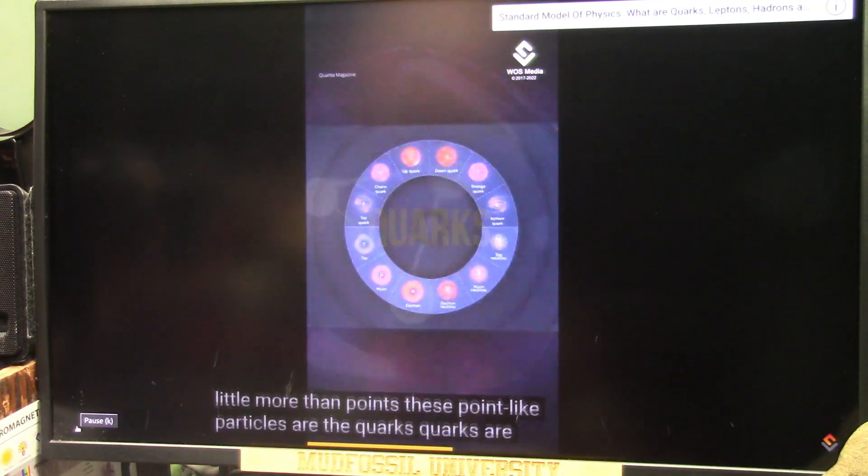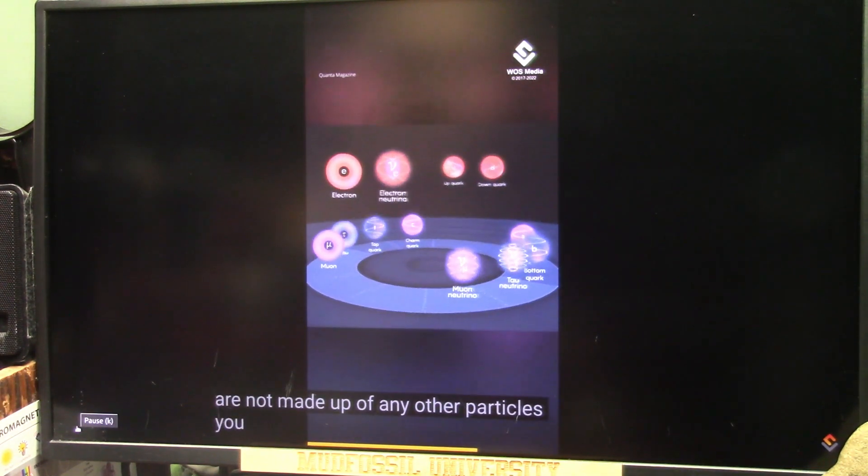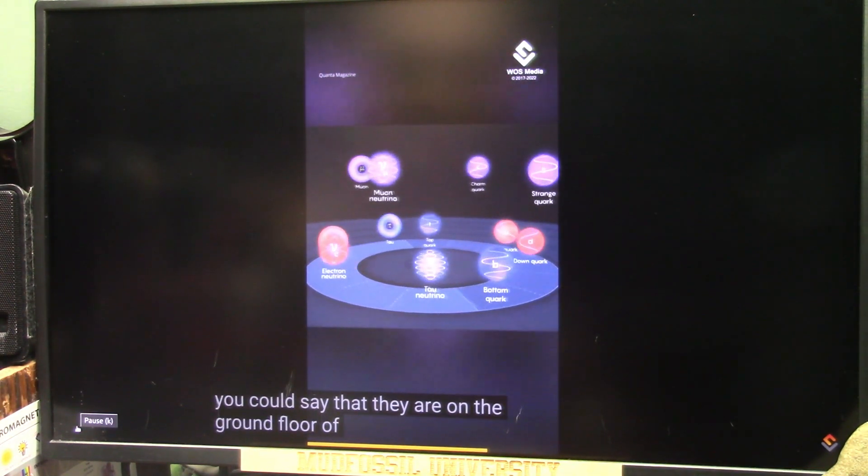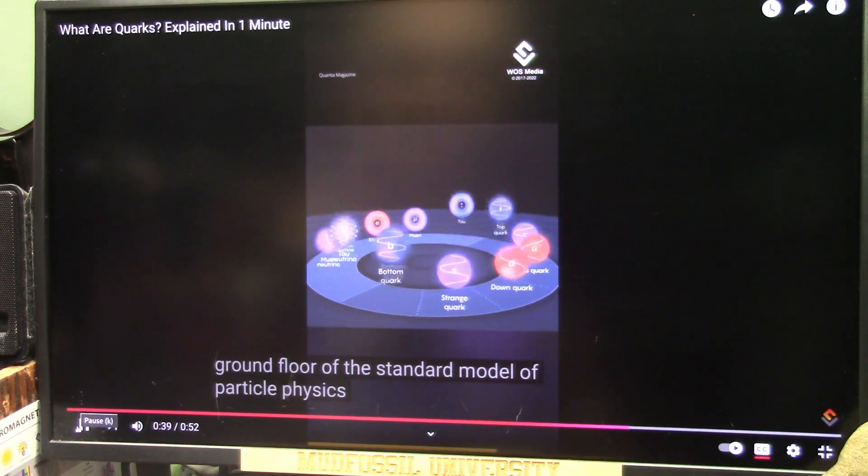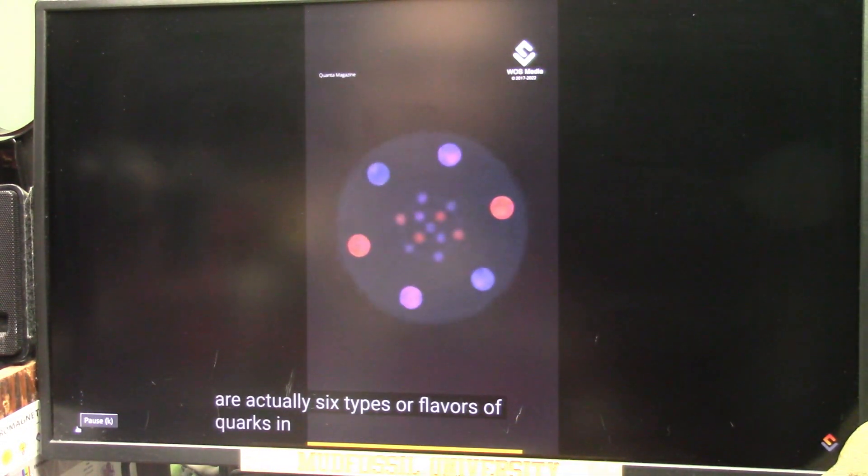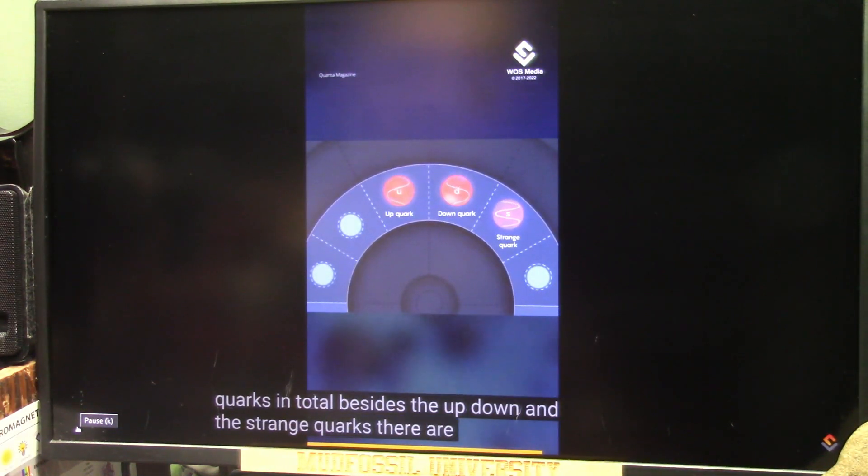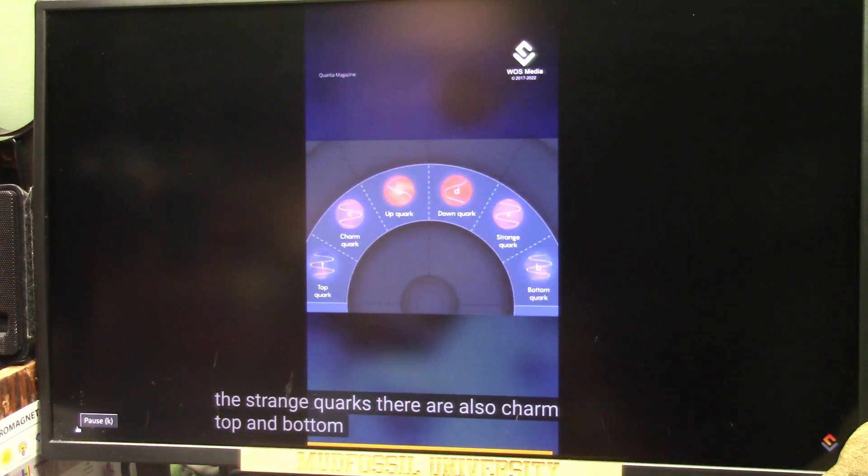Quarks are elementary particles. Like electrons, they are not made up of any other particles. You could say that they are on the ground floor of the standard model of particle physics. It turns out that there are actually six types or flavors of quarks in total. Besides the up, down and the strange quarks, there are also charm, top and bottom quarks.